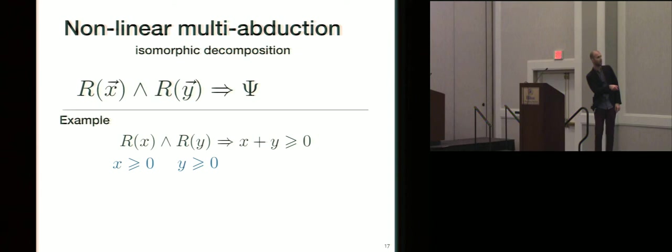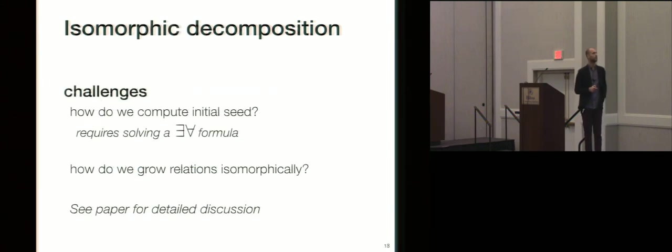So for instance, if I say Rx and Ry implies x plus y is greater than or equal to zero, the only possible solution for this, or the maximal solution for this non-linear multi-abduction problem is that x is greater than or equal to zero and y is greater than or equal to zero. You can easily see that these are the same formula modulo-variable renaming. So that's a simple idea. If I have the same function appearing multiple times, I want to synthesize the same specification for each occurrence of the function. So isomorphic decomposition. I'm not going to go into detail. The algorithm is pretty involved, but it's actually way more complex than the traditional or the linear multi-abduction.